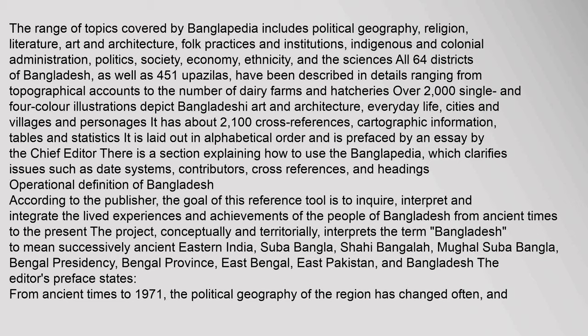The range of topics covered by Banglopedia includes political geography, religion, literature, art and architecture, folk practices and institutions, indigenous and colonial administration, politics, society, economy, ethnicity, and the sciences. All 64 districts of Bangladesh, as well as 451 Upazilas, have been described in detail ranging from topographical accounts to the number of dairy farms and hatcheries. Over 2,000 single and four-color illustrations depict Bangladeshi art and architecture, everyday life, cities and villages, and personages. It has about 2,100 cross-references, cartographic information, tables, and statistics.